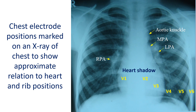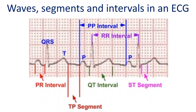The number of leads may be increased using additional electrodes in specific situations. Waves noted in a normal ECG are called P wave, QRS complex, T wave, and sometimes a U wave. Other waves which can be rarely seen are delta waves and epsilon waves.